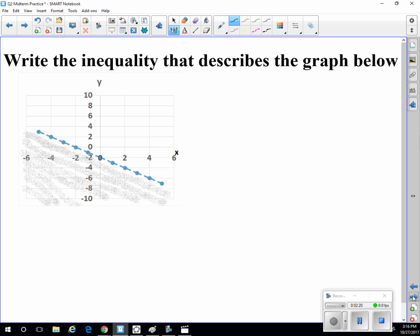Write the inequality that describes the graph below. So we have a y-intercept of negative 2, because this is 0, 0 right here. So we know we have a y-intercept of negative 2.